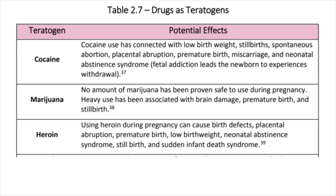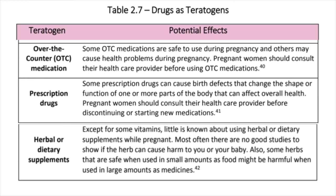Marijuana: no amount of marijuana has been proven safe to use during pregnancy. Heavy use has been associated with brain damage, premature birth, and stillbirth. Heroin: using heroin during pregnancy can cause birth defects, placental abruption, premature birth, low birth weight, neonatal abstinence syndrome, stillbirth, and sudden infant death syndrome. Over-the-counter (OTC) medications: some OTC medications are safe to use during pregnancy, and others may cause health problems. Pregnant women should consult their healthcare provider before using OTC medications.